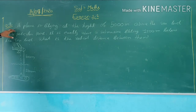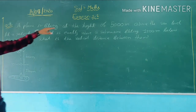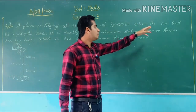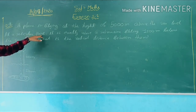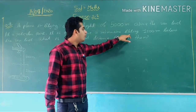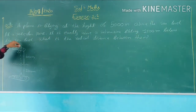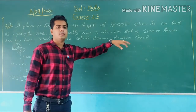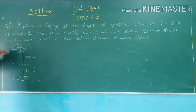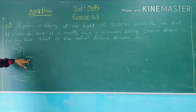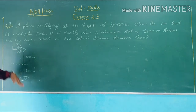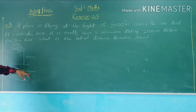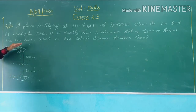Now, question number 4. A plane is flying at the height of 5000 meters above the sea level. At a particular point, it is exactly above a submarine floating 12,000 meters below the sea level. What is the vertical distance between them? The plane is at 5000 meters and the submarine is below sea level.